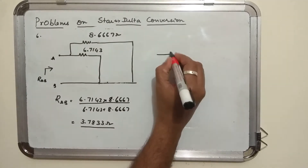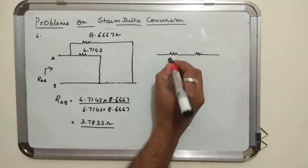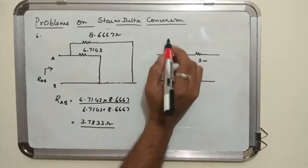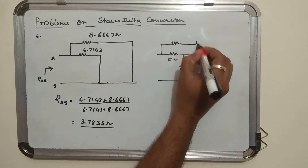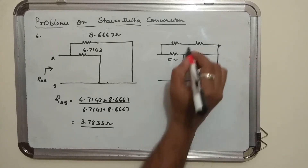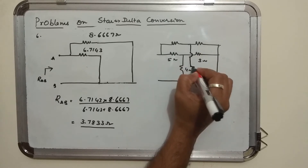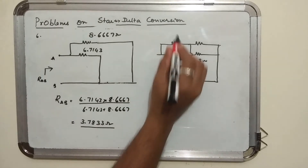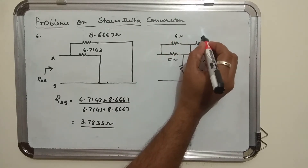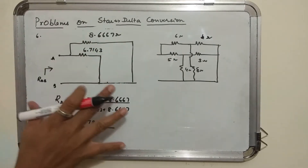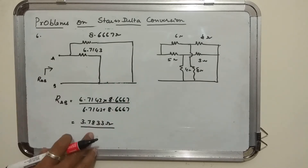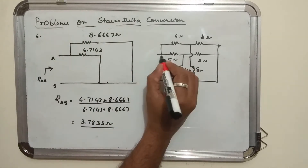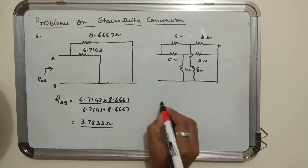Now we can solve this problem using another method. Rewriting the circuit: 5 ohm, 3 ohm, 4 ohm, 6 ohm resistance, another 4 ohm resistor, with a short and an 8 ohm resistor. As we can see, 6 ohm and 4 ohm are present here, and the resistors 5, 3 and 4 are star connected.